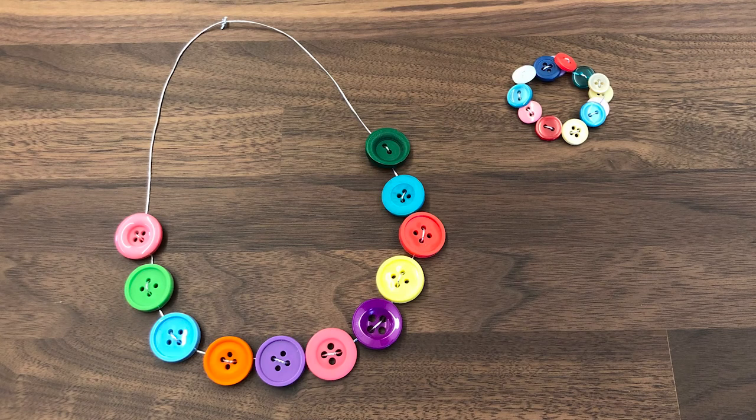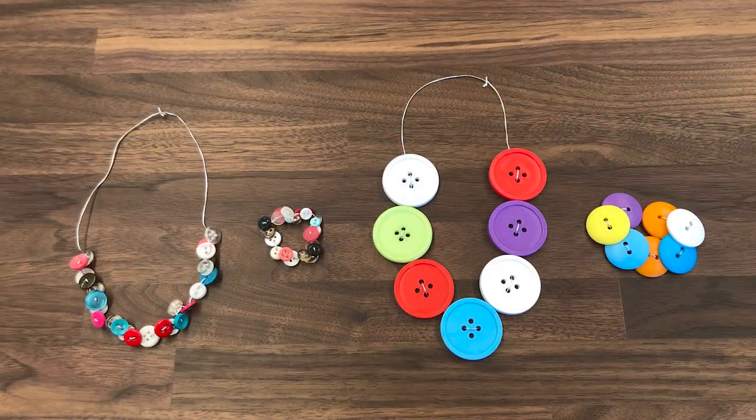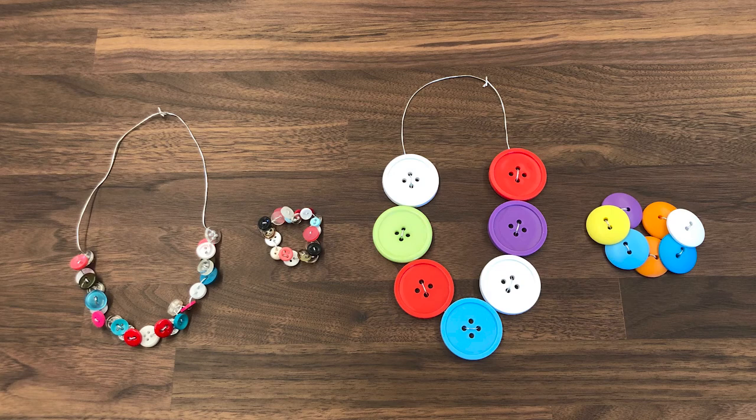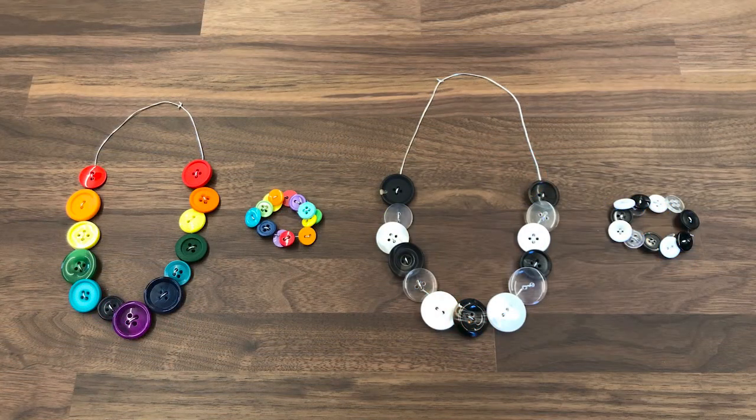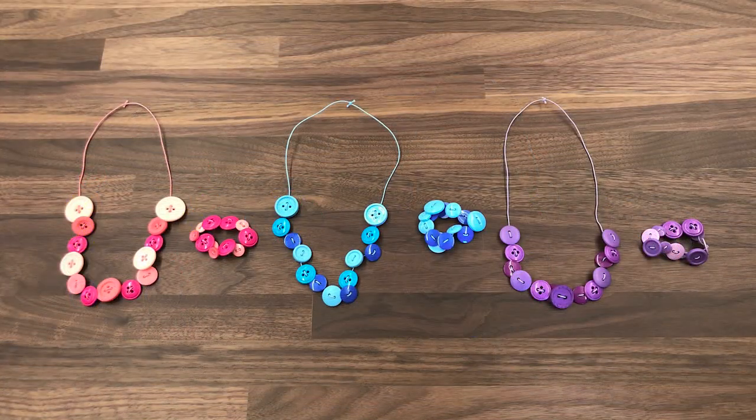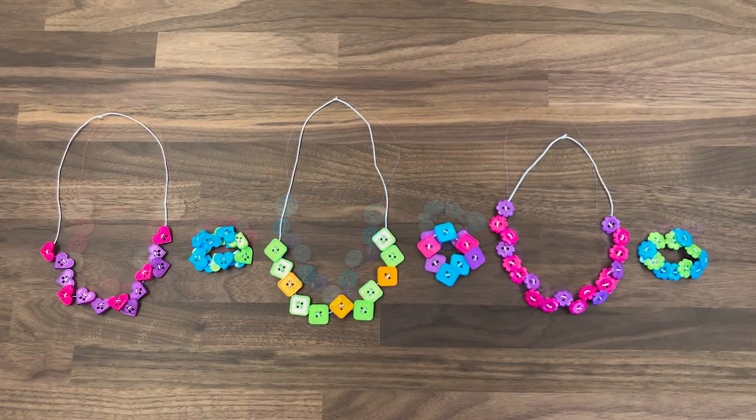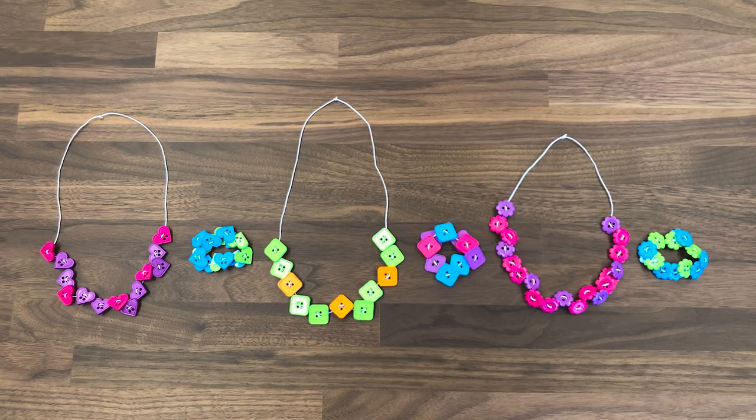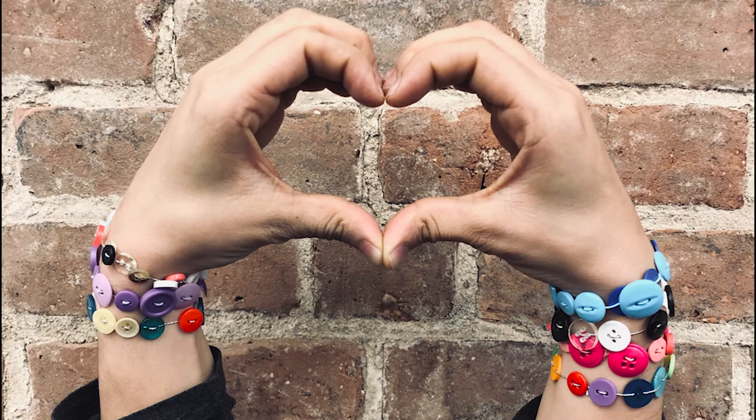And that's how you make button necklaces and bracelets. You can choose buttons of any size from mini to jumbo. They can be in rainbow or black and white. You can also change the color of your cord to match. You can even use buttons with different shapes. There's no limit to your imagination.